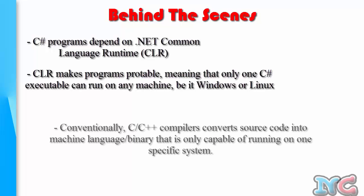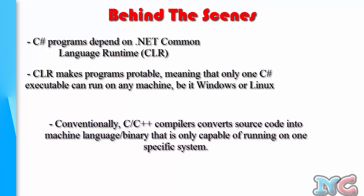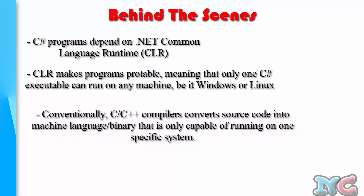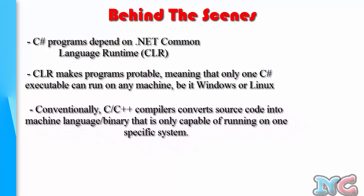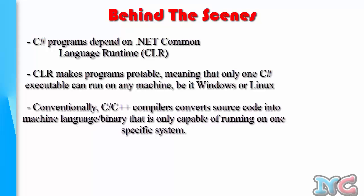Traditionally, during the days of C and C++, compilers would only target specific operating systems. If you created a program only for Windows it would only run on Windows, and if only for Linux it would only run on Linux — a significant limitation that C# addresses.